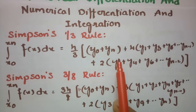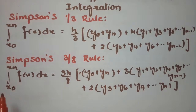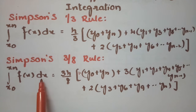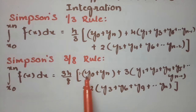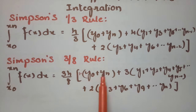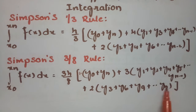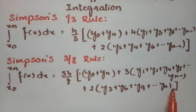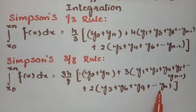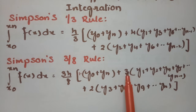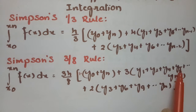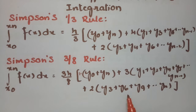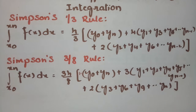Coming to Simpson's 3/8th rule: the integral from x0 to xn of f(x) dx equals 3h/8 times [y0 plus the last ordinate, plus 2 times the multiples of 3 — that is y3, y6, y9, and so on — plus 3 times the remaining ordinates y1, y2, y4, y5, y7, y8, and so on].